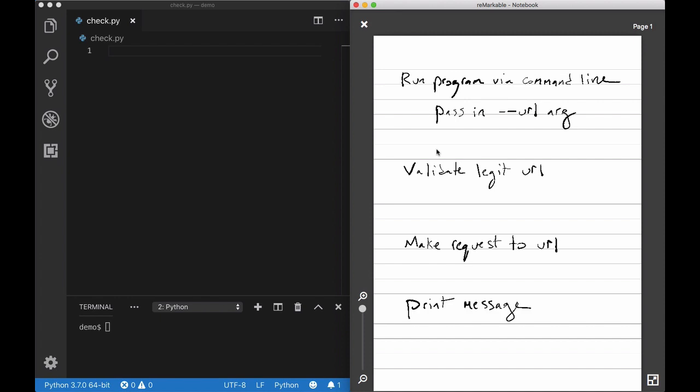And finally, we want to print a message to the user. In the previous step, we made a request to the URL, and there's going to be a response to that request. If the response status code is an error, then we want to print an error message, and otherwise we want to print a success message.